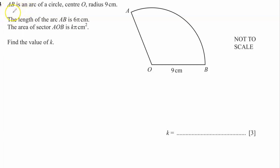Hello everyone, let's solve this problem. AB is an arc of a circle, center O, radius 9 cm. The length of the arc AB is 6π cm. The area of sector AOB is kπ cm squared. Find the value of k.